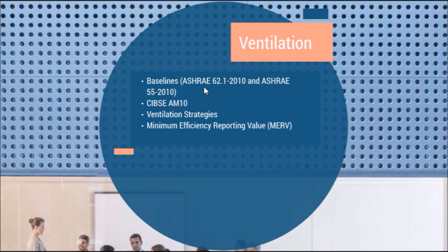These terms can be pretty confusing, but they're so important to know for the LEED exam because this is where LEED gets its baseline from. ASHRAE 62.1 is concerned with HVAC systems, ventilation, and indoor air quality standards, whereas ASHRAE 55 is concerned with thermal comfort of occupants. CIBSE AM10 is concerned with natural ventilation rates for non-domestic buildings. These are the three main standards we're concerned about in this chapter.